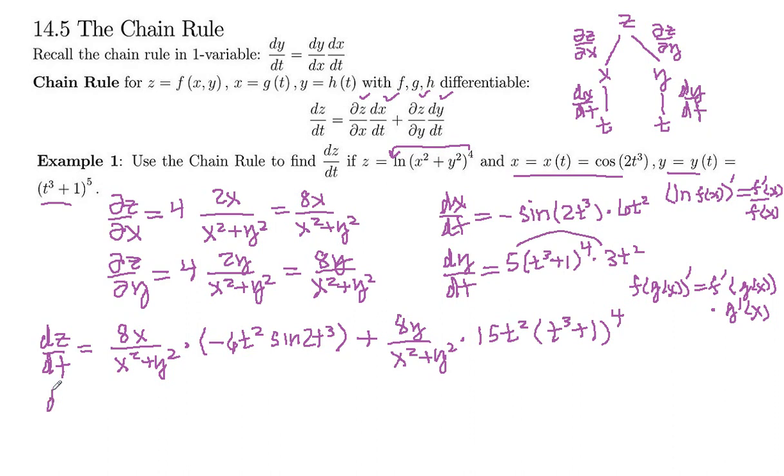So what if we wanted to evaluate dz/dt here at t equals 0? Well if t equals 0, then we could plug that in here. We get cosine of 0 is 1, so x equals 1. And then y is 0³ + 1, 1 to the 5th, so y is also equal to 1.